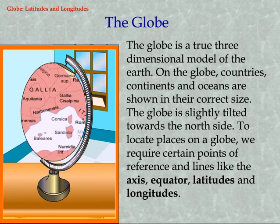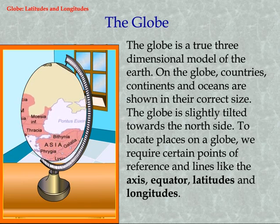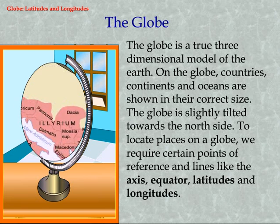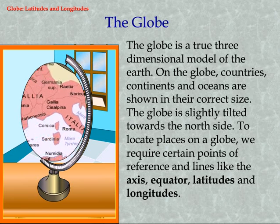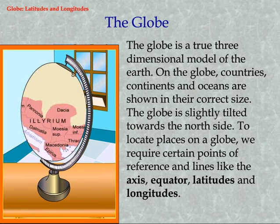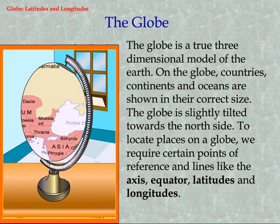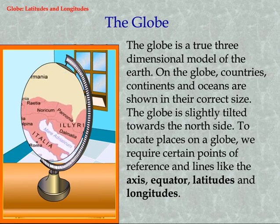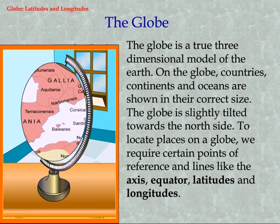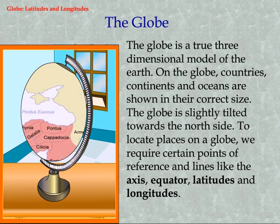The globe is slightly tilted towards the north side. To locate places on a globe, we require certain points of reference and lines like the axis, equator, latitudes and longitudes.